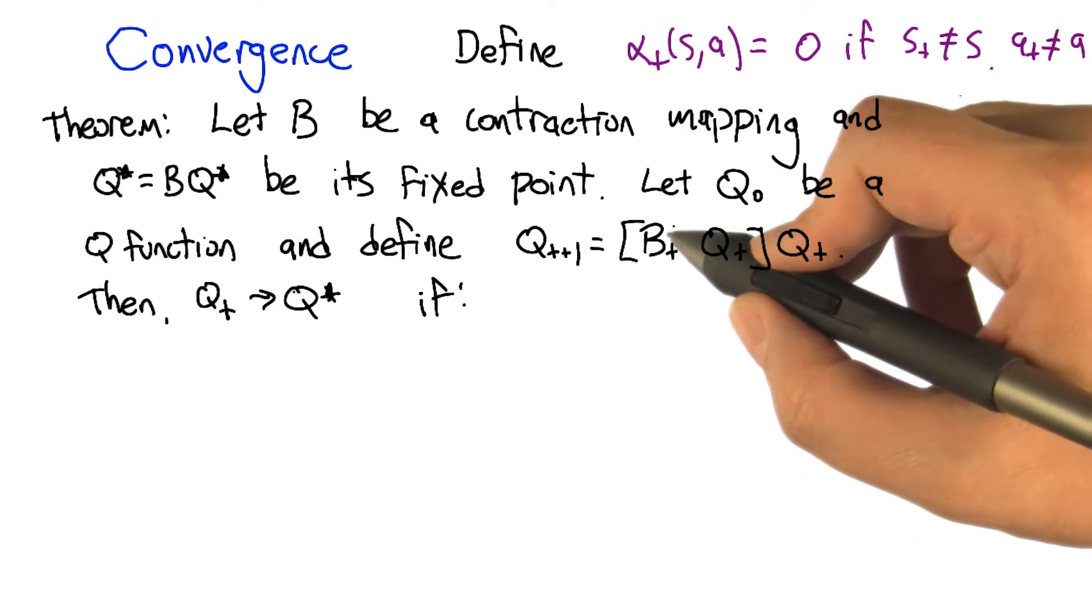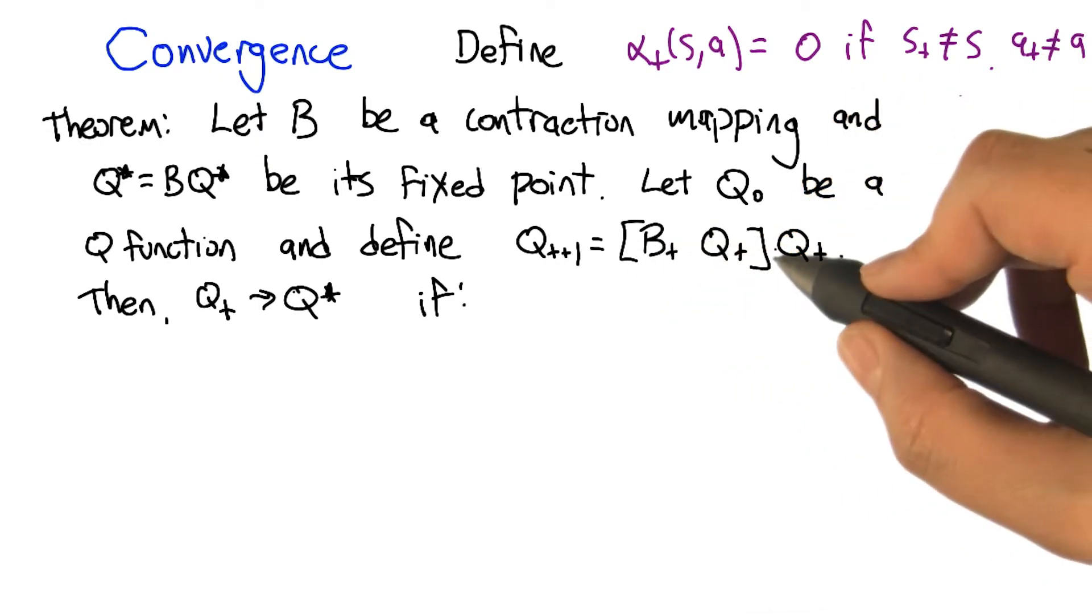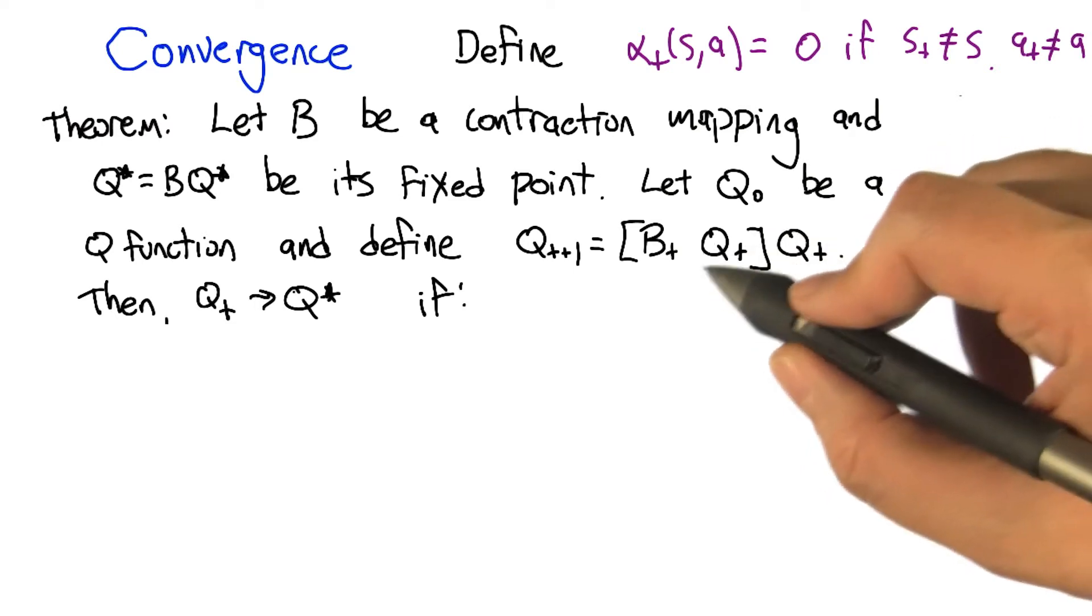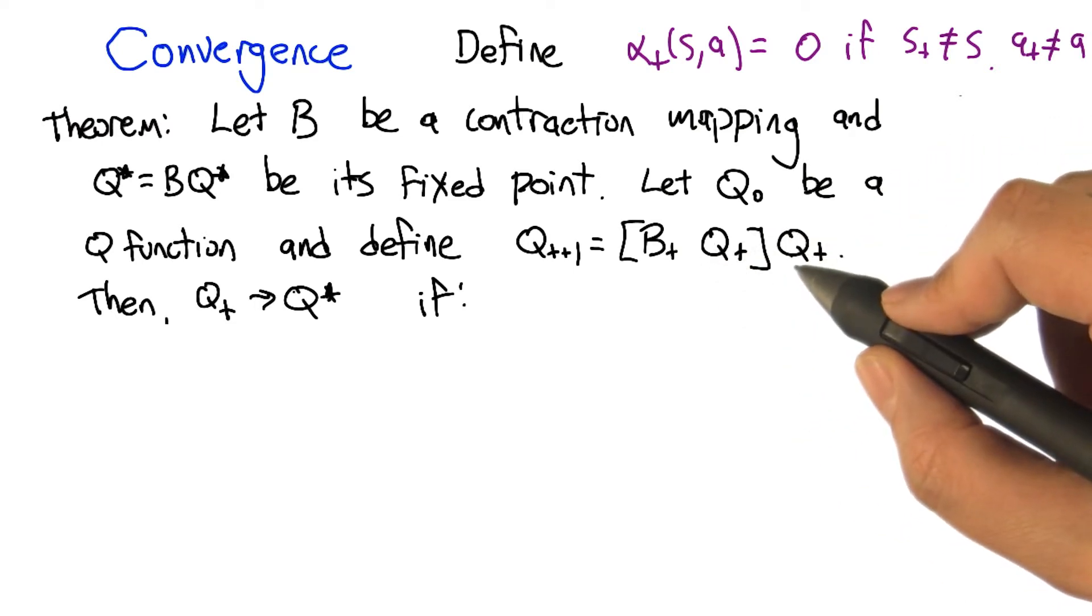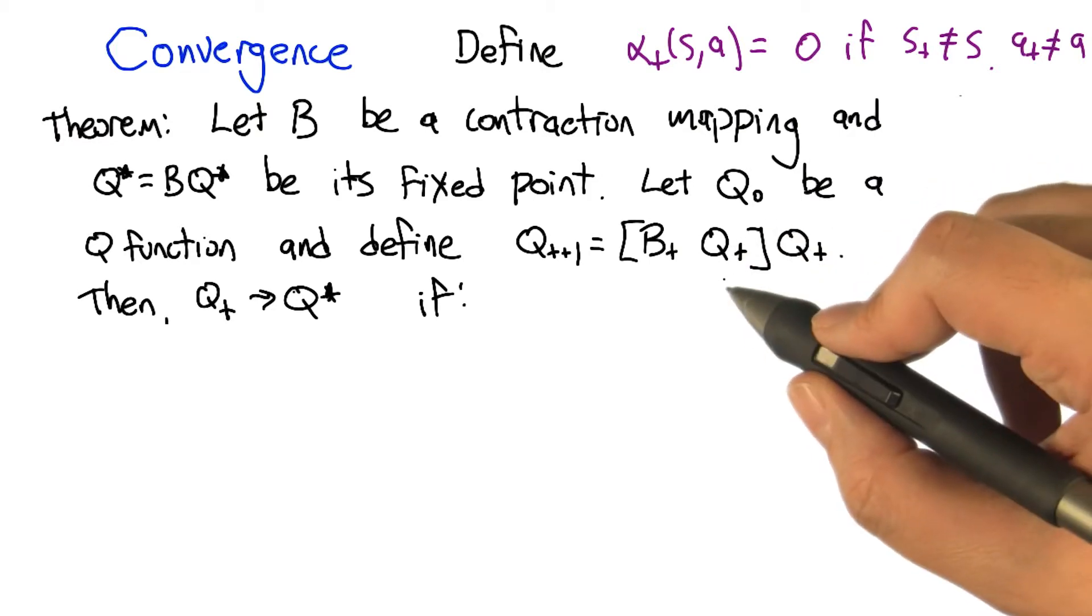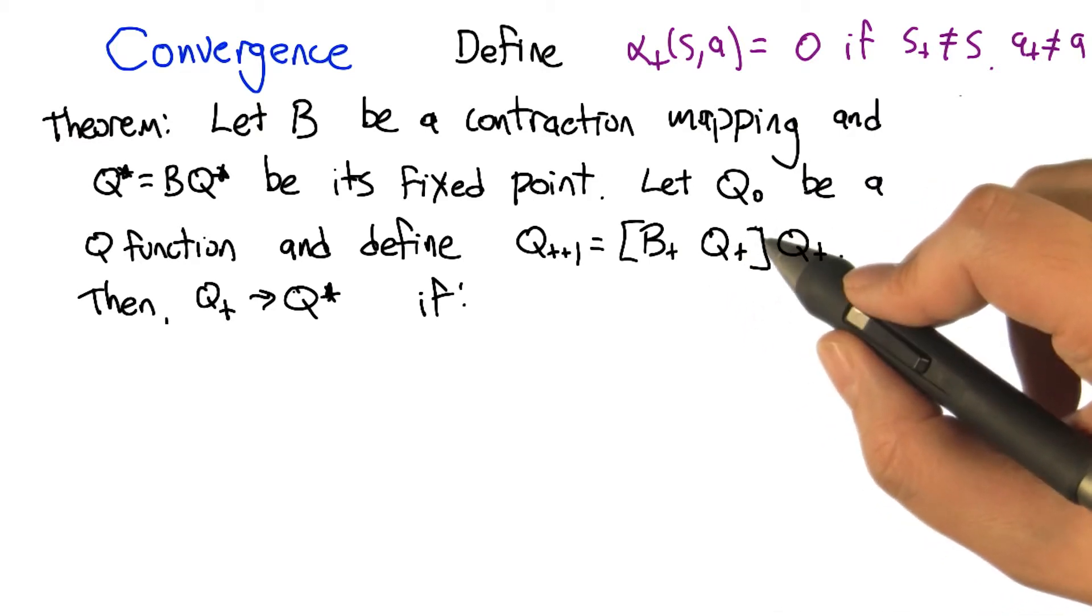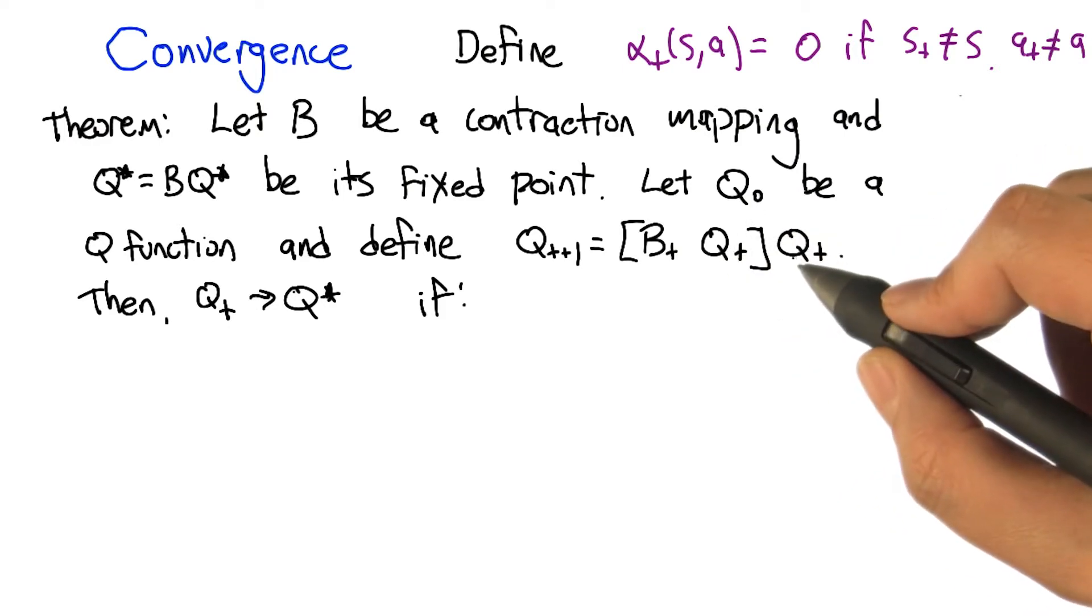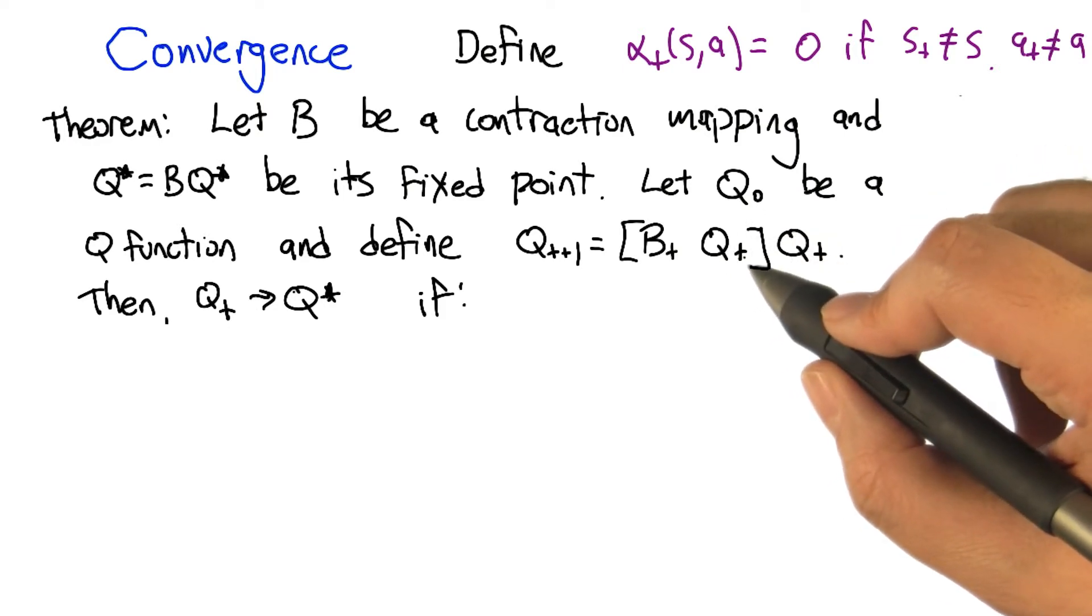this is essentially the Q-learning update, but we're going to separate out the two different Q functions that are used in the Q-learning update. One is the past Q function that we're using to average together to take care of the fact that there's noise in the transitions. The other Q function is the one that we're using in one-step lookahead as part of the Bellman equation.